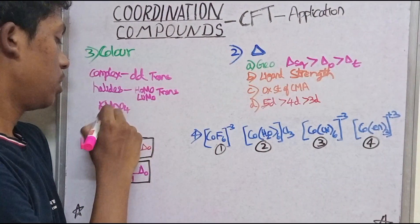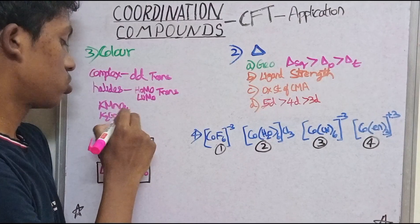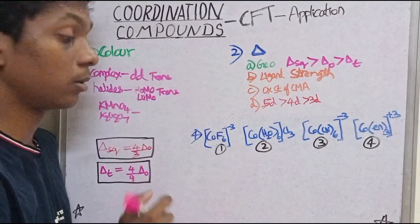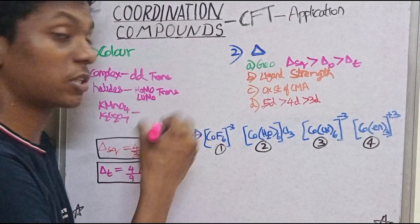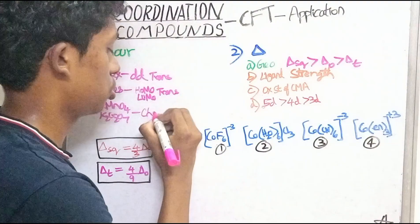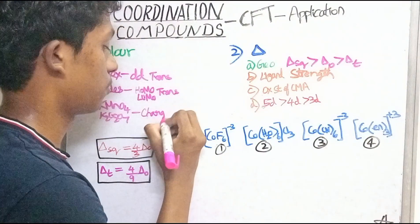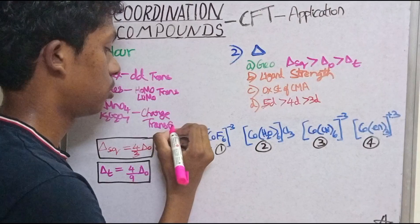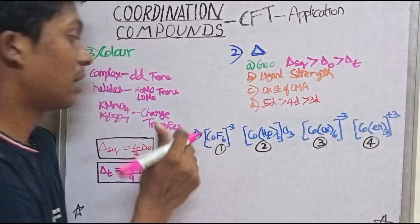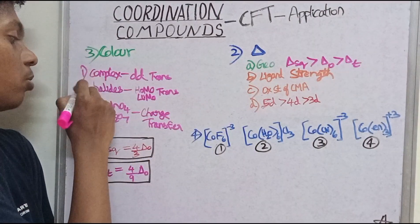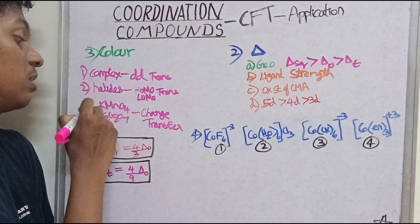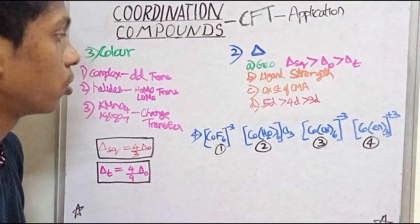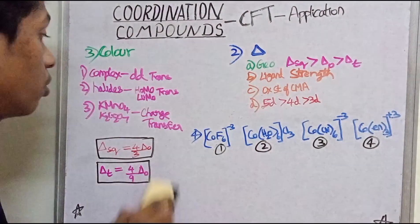K₂Cr₂O₇ shows color through charge transfer, not D-D transition. This is a special case. So the reason for color in a complex can be D-D transition, HOMO-LUMO transition, or charge transfer.